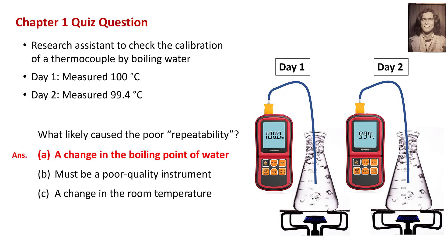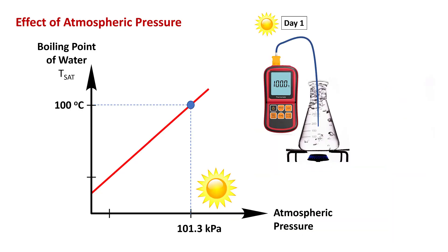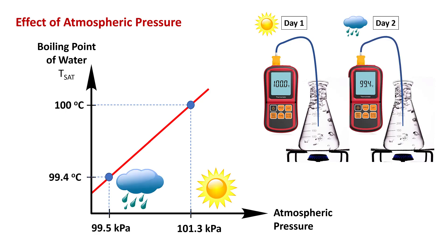So the answer is, it was a change in the boiling point of water that I failed to recognize. What had happened is on day one, it was a nice sunny day, and the pressure was maybe 101.3 kPa, and I measured 100 degrees C. And then the next day, it was a rainy day, and the pressure was 99.5 kPa, and water at that pressure boils at 99.4 degrees C.